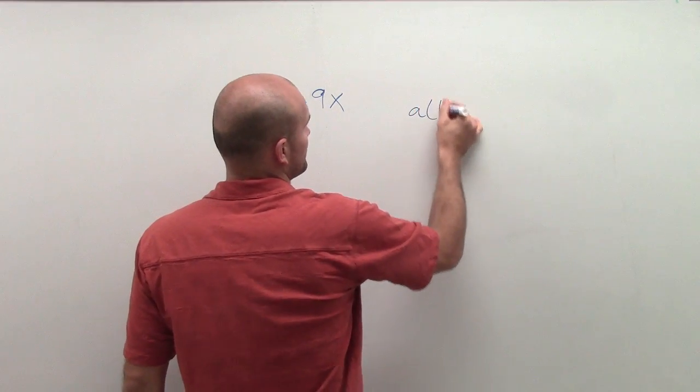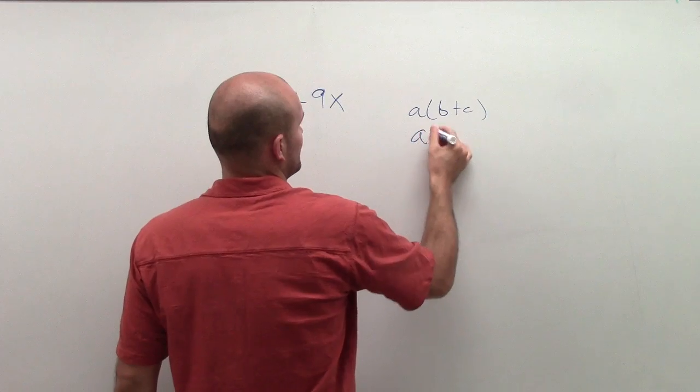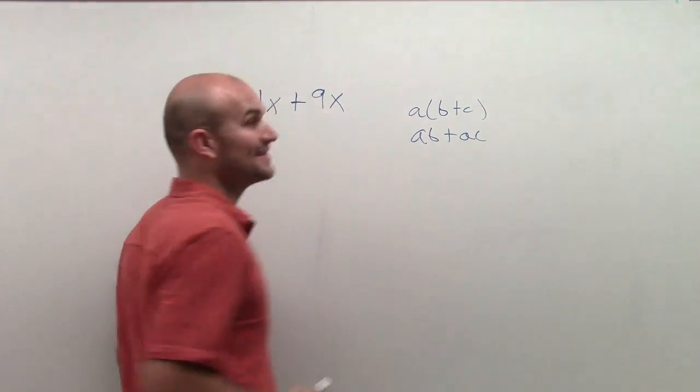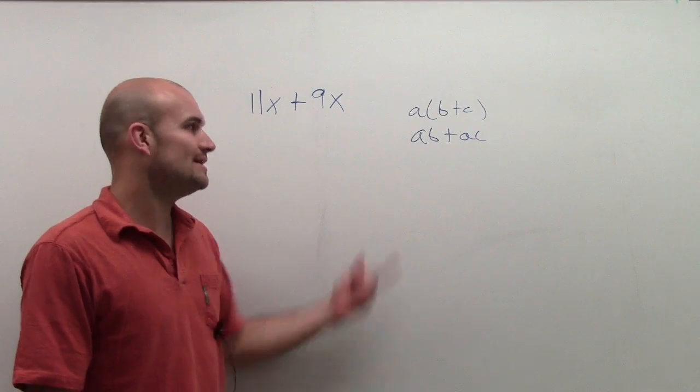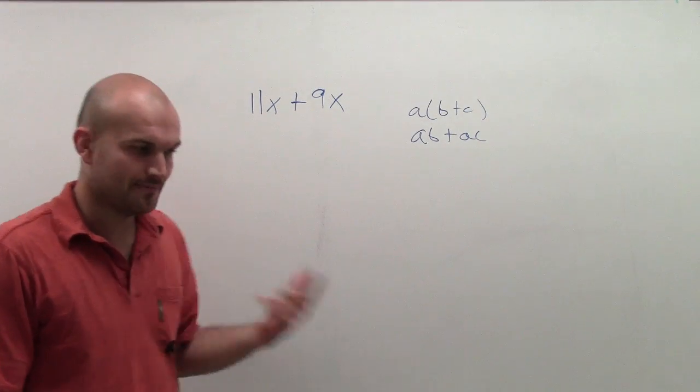So the distributive property is a times b plus c equals ab plus ac, that's multiplication.